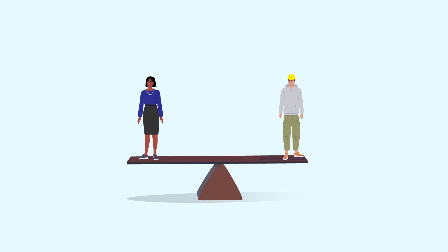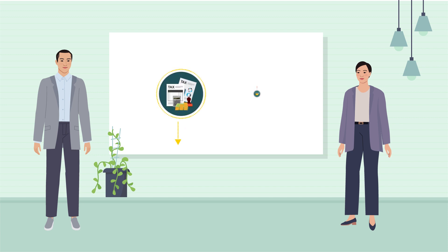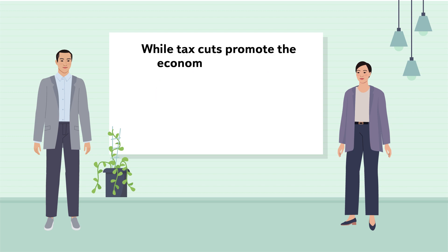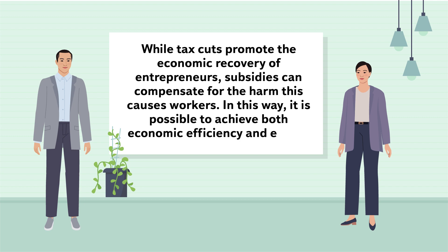The socially optimal option would be a trade-off that balances the welfare of entrepreneurs and workers by stimulating the economy while protecting those whose wealth is dependent on labor income. Given this, Professors Li and Zhao propose a solution: when economic contraction hits, governments should cut income taxes and subsidize workers simultaneously. While tax cuts promote the economic recovery of entrepreneurs, subsidies can compensate for the harm this causes workers. In this way, it is possible to achieve both economic efficiency and equity.